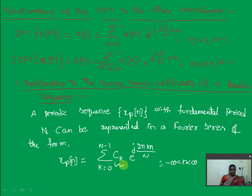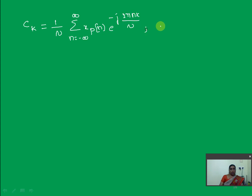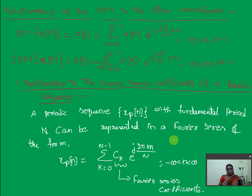Now what is ck here? It is the Fourier series coefficient. By using the formula: ck equals 1 over N, summation of xp(n) times e to the power minus j 2π nk over N, where n is from minus infinity to infinity and k ranges from 0 to N minus 1. In this way you can find the ck value. Let this be equation 2 and the previous one equation 1.